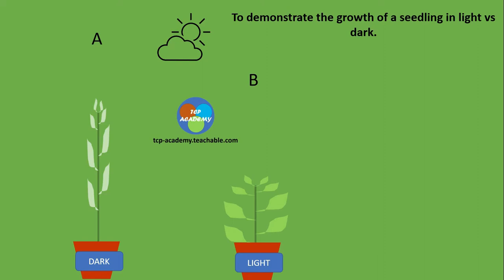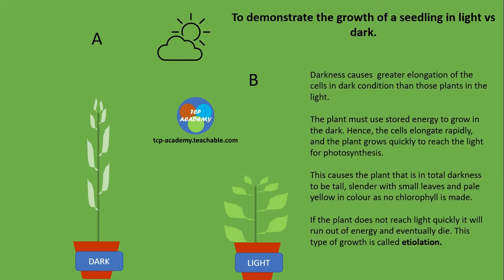Why is this so? Simply put, darkness causes the cells in A to elongate faster. The plant must use stored energy to grow in the dark. Hence, the cells elongate rapidly and the plant grows quickly to reach light for the process of photosynthesis.